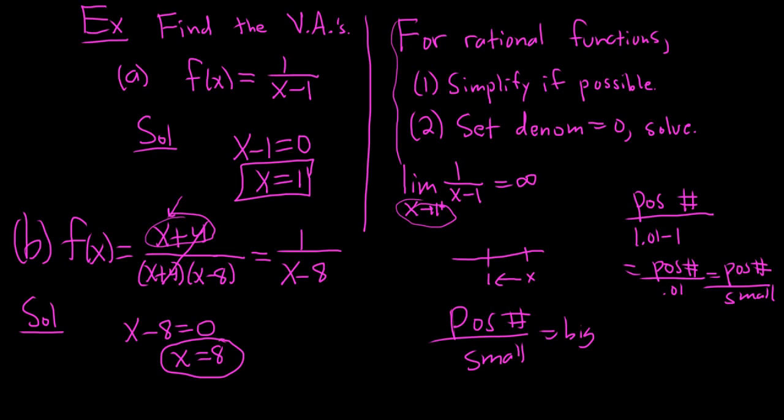This is very similar to what we did earlier when we find removable and non-removable discontinuities. Negative 4 is a removable discontinuity and 8 is a non-removable discontinuity because it's a vertical asymptote.